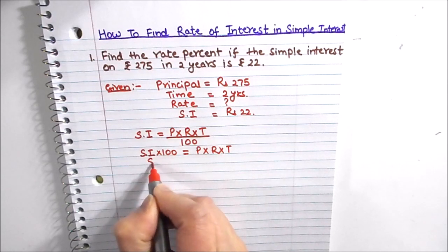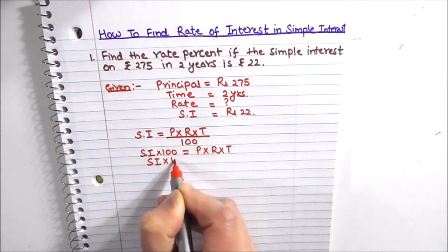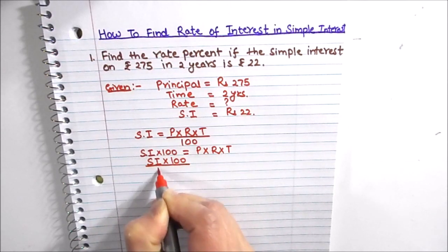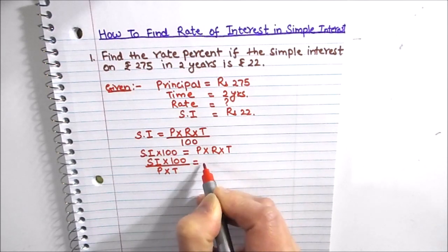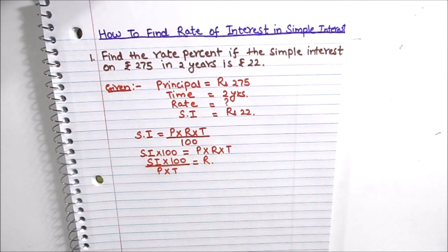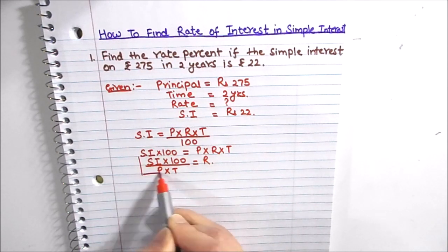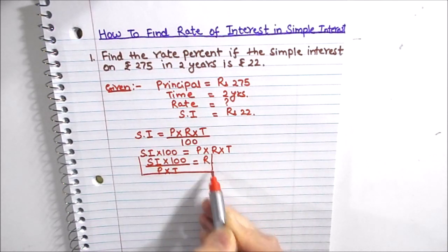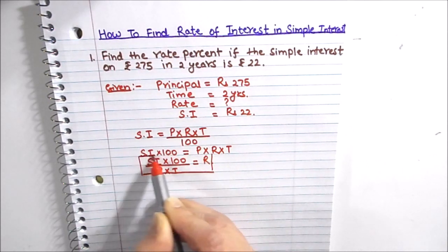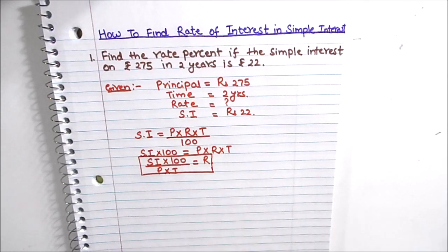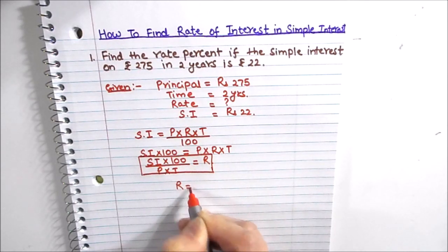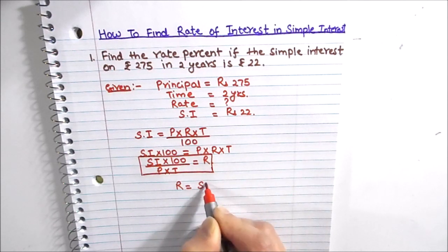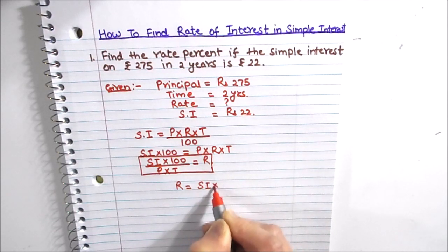So the formula becomes: Rate of Interest = Simple Interest × 100 ÷ (Principal × Time). We have now derived the formula for finding the rate of interest, and we are going to use this formula and substitute all the given values.